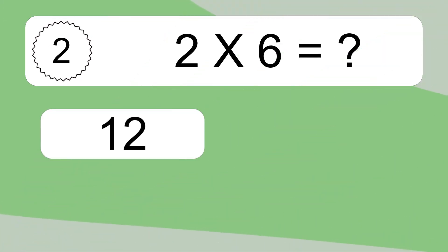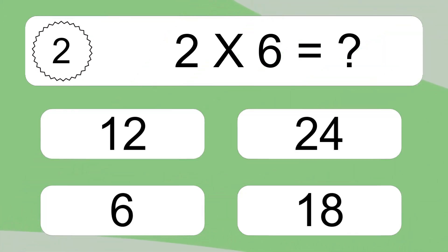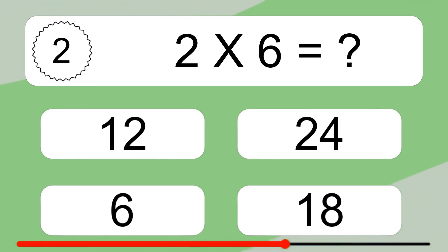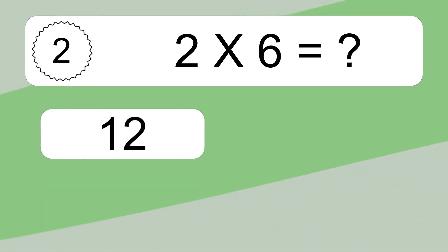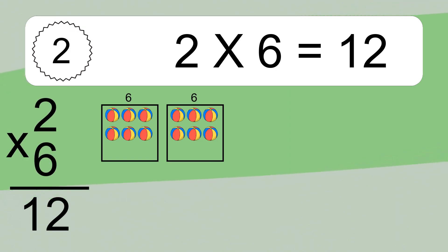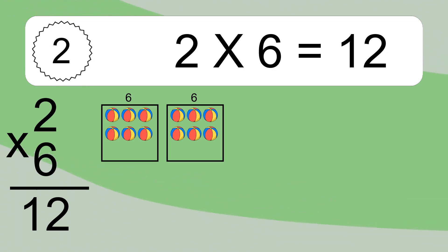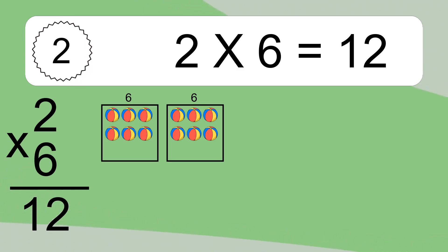2 times 6 equals what? 2 times 6 equals 12. We have 2 boxes, and each box has 6 colorful balls inside. If you count all the balls in all the boxes together, you will have 2 times 6 balls. This equals 12 balls.